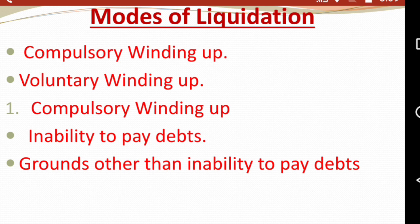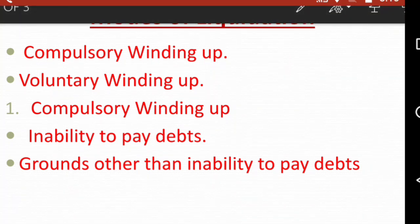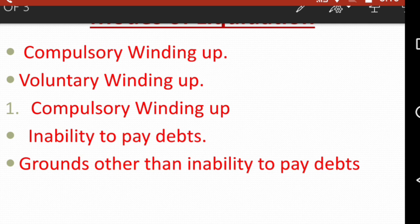The second option under compulsory winding up is grounds other than inability to pay debts. This means the company is able to pay debts but is involved in fraudulent or unlawful activities such as tax evasion or fraud. So to revise: compulsory winding up has two grounds — inability to pay debts, and grounds other than inability to pay debts such as unlawful activities.